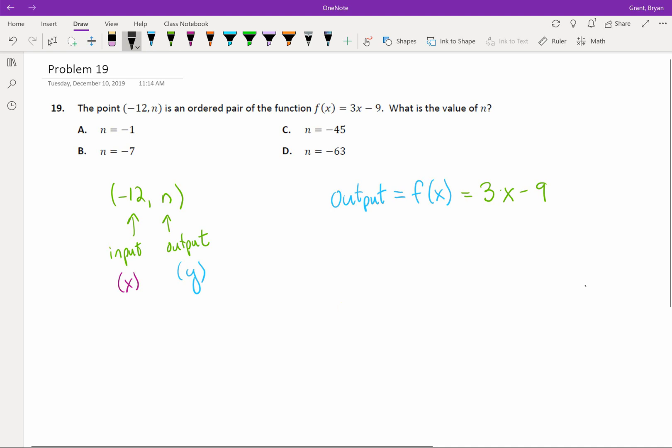We should remember that our formula is always take an input, in this case which is called x, and give us an output which is usually called f of x or sometimes y. We know the input's negative 12. If I want to find the output, that means we need to replace the input with negative 12. Or, this was really just a fancy way to say, plug negative 12 into the problem.